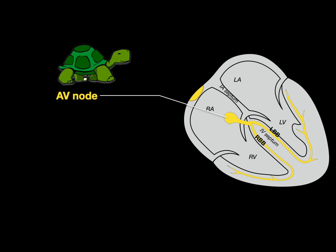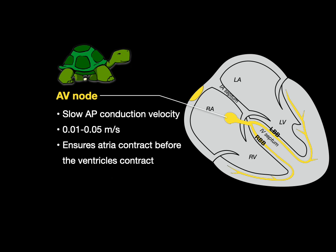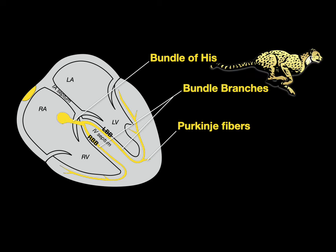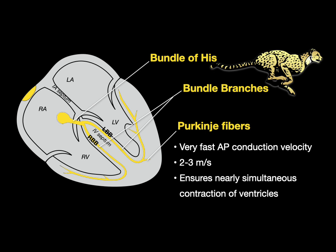In a nutshell, the AV node is a turtle — very slow action potential conduction velocity, like 0.05 meters per second. This is what ensures the atria contract before the ventricles. In contrast, the bundle of His, bundle branches, and Purkinje fibers are a cheetah — very fast action potential conduction velocity of 2 to 3 meters per second. This is what ensures a nearly simultaneous contraction of the ventricles.